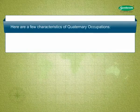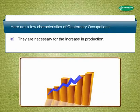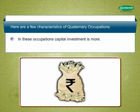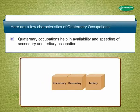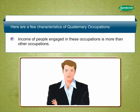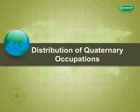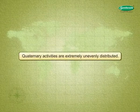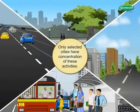Characteristics of Quaternary Occupations. Here are a few characteristics of quaternary occupations. These occupations are based on an individual's knowledge and skill. They are necessary for the increase in production. In these occupations, capital investment is more. Quaternary occupations help in the availability and speeding of secondary and tertiary occupation. Income of people engaged in these occupations is more than other occupations. Quaternary activities are extremely unevenly distributed, and only selected cities have concentration of these activities.